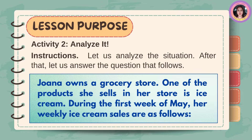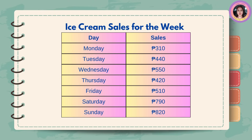Activity 2, Analyze It. Instructions: let us analyze the situation, then answer the questions that follow. Joanna owns a grocery store. One of the products she sells is ice cream. During the first week of May, her weekly ice cream sales are as follows — Monday: P300, Tuesday: P440, Wednesday: P550, Thursday: P420, Friday: P510, Saturday: P790, and Sunday: P820.